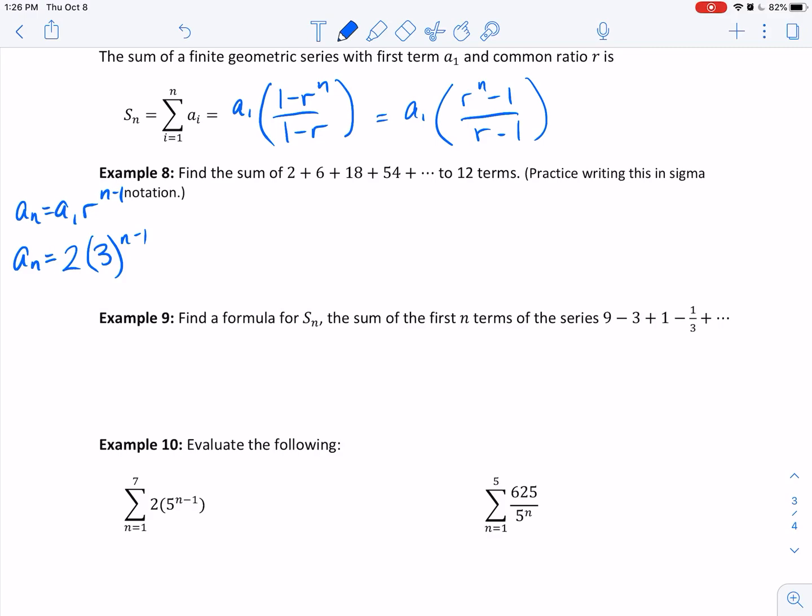To put it in sigma notation, it's the sum as n goes from 1 to 12 of 2 times 3 to the n minus 1. You could put it on the outside or on the inside, either way is fine.